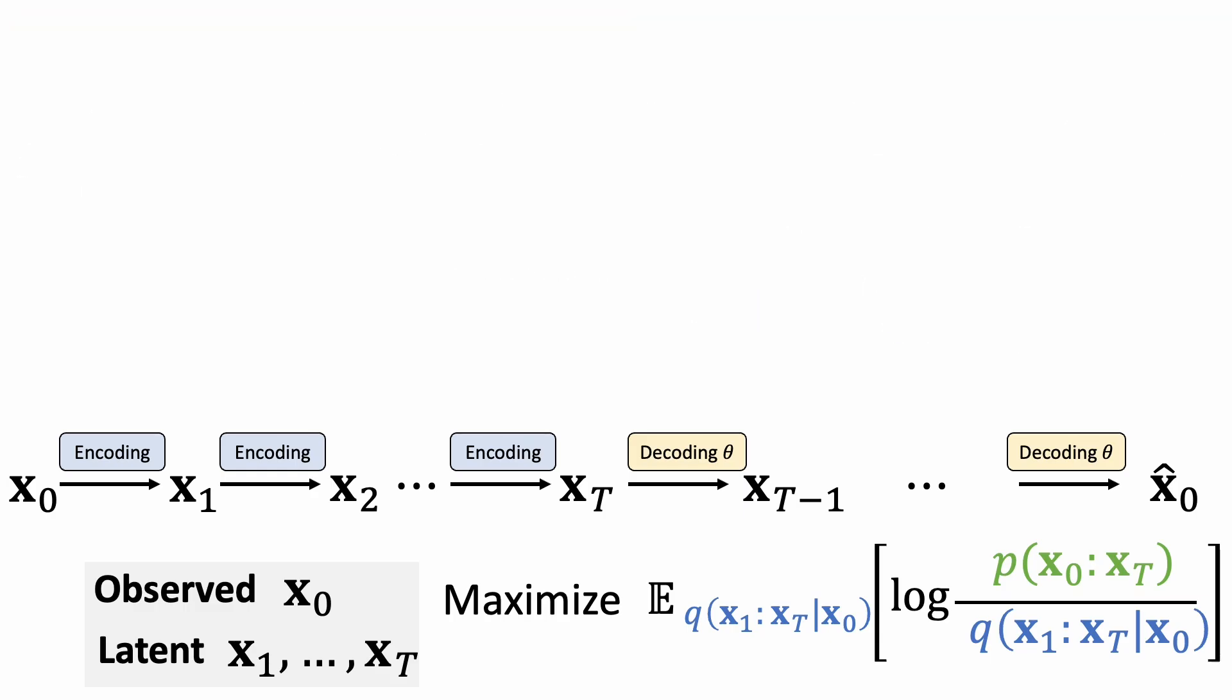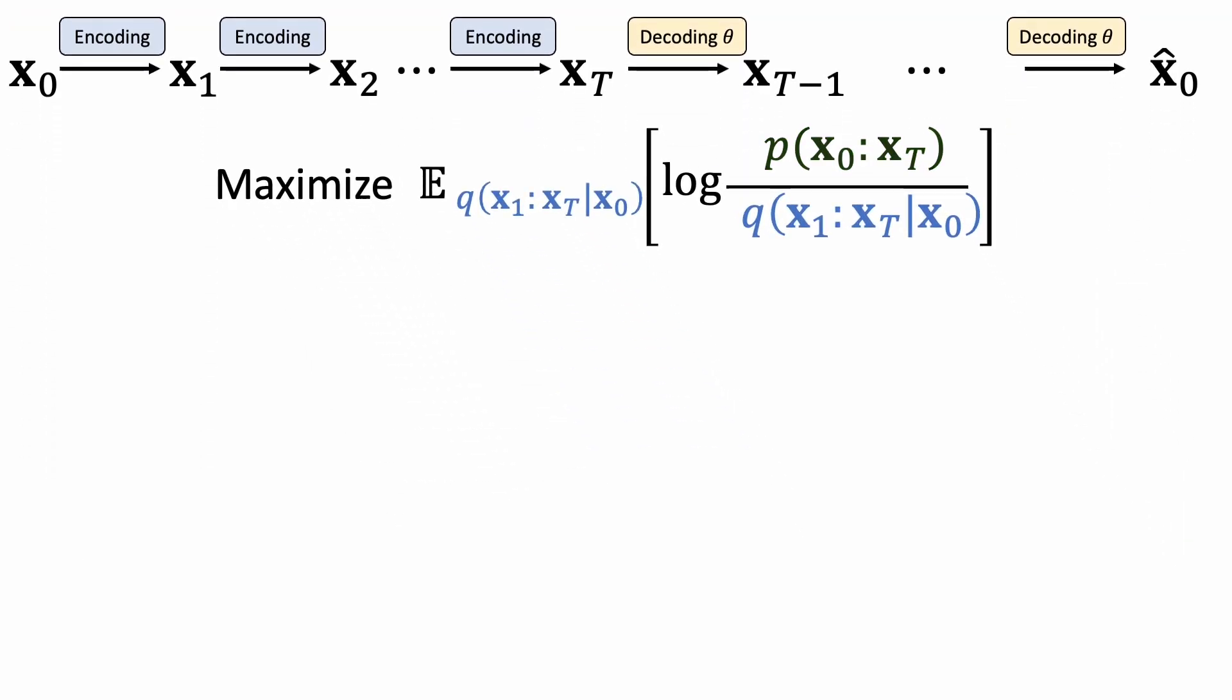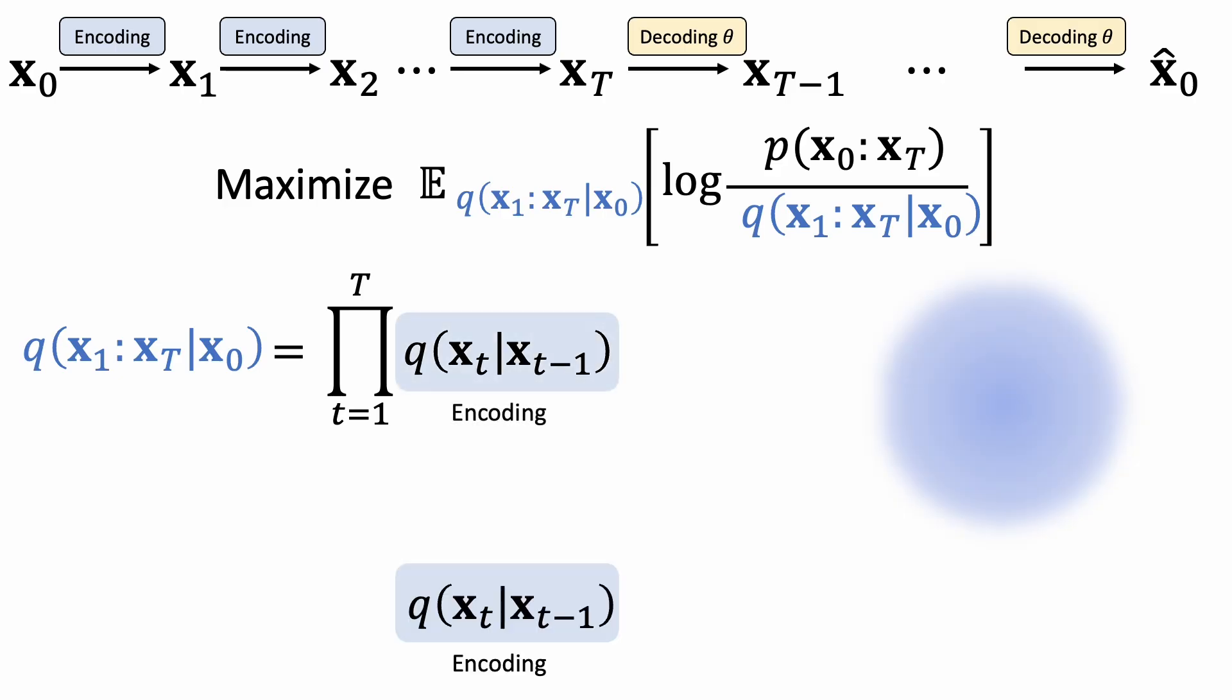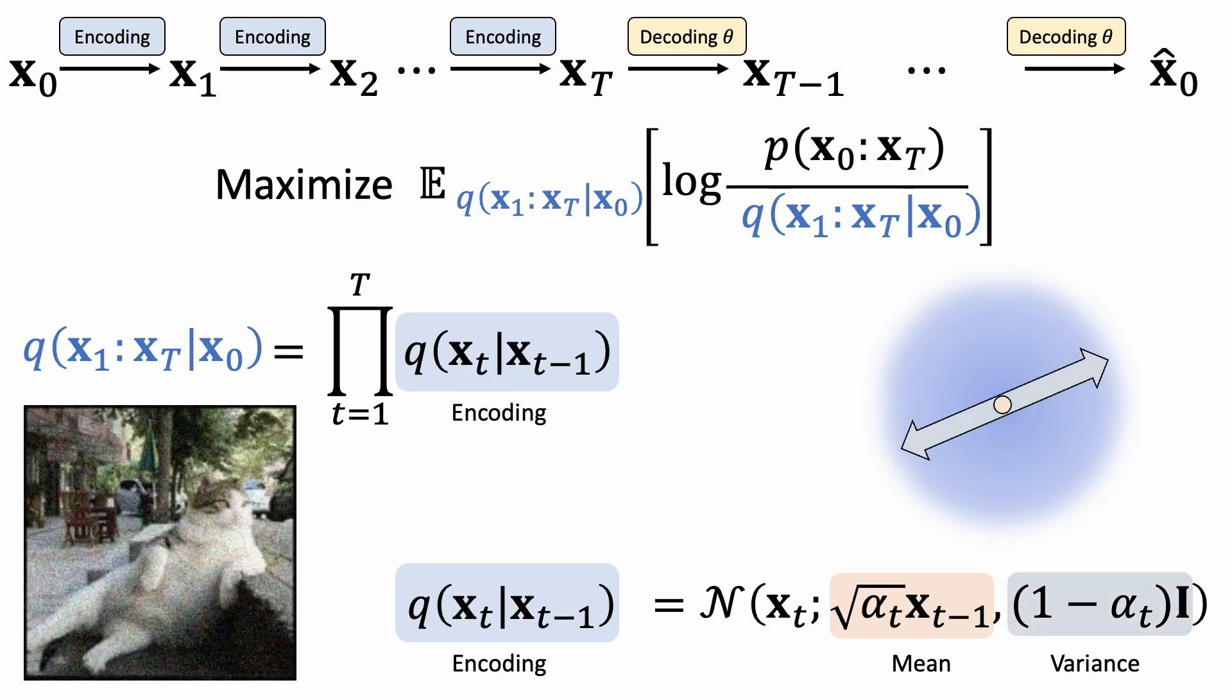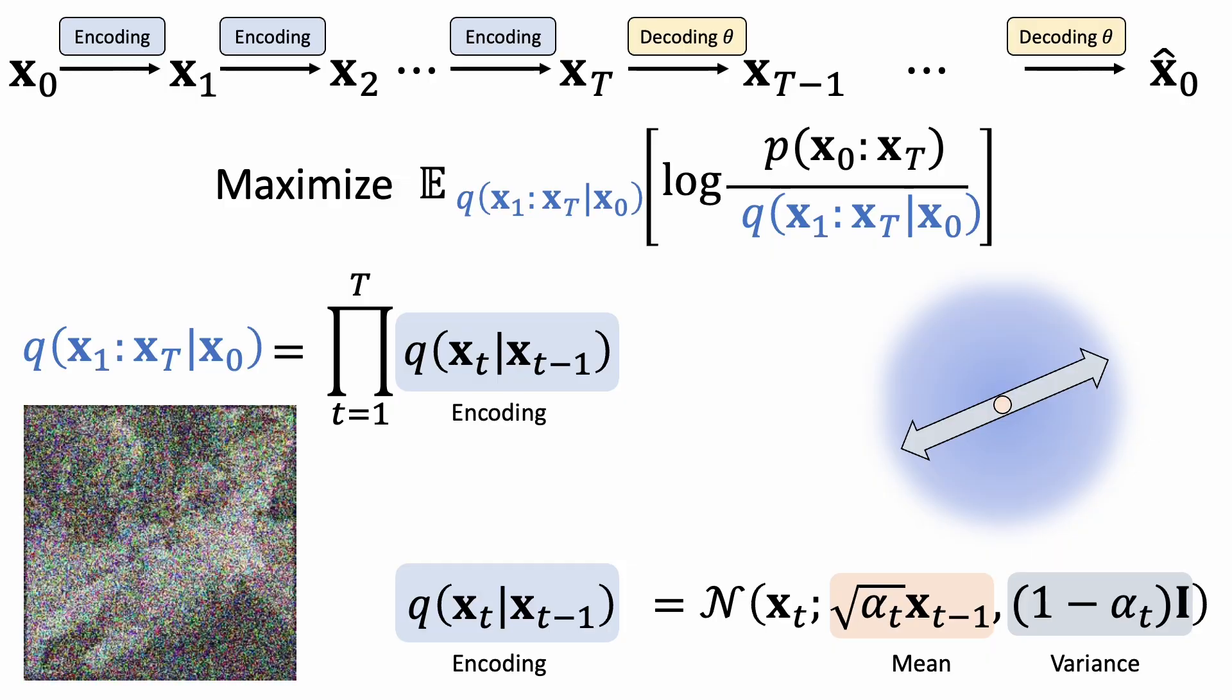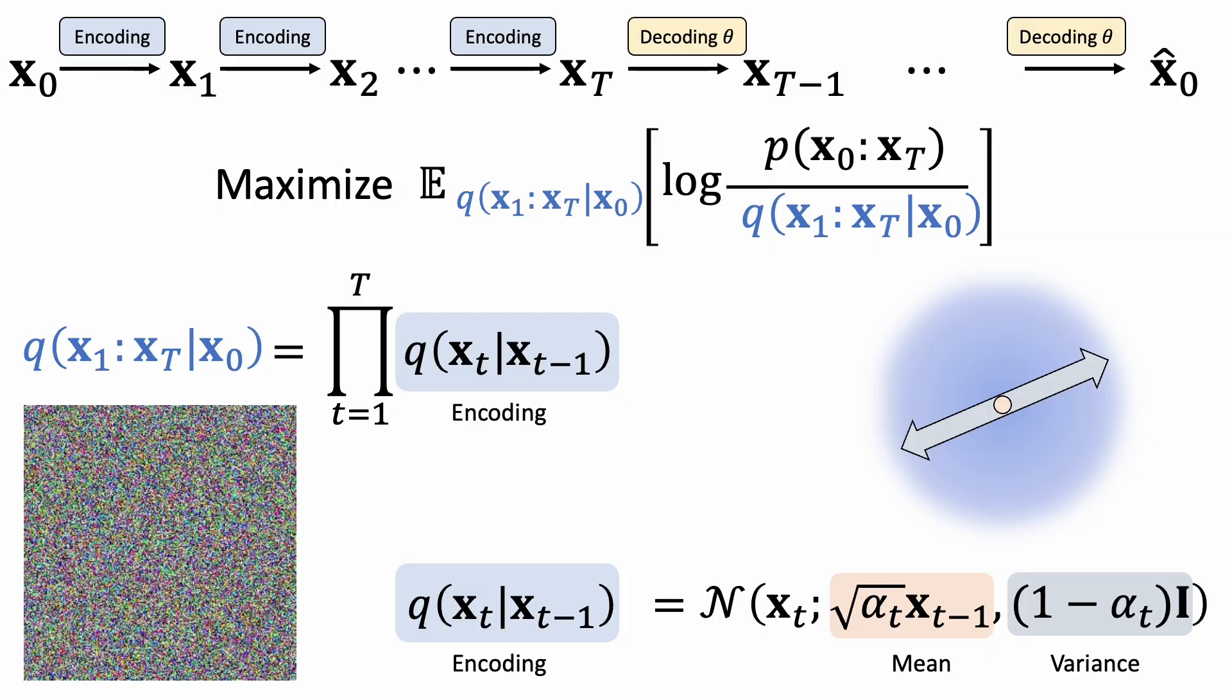Okay, let's first take a look at what the encoding process looks like. We can write the encoding process as a product of transition probabilities. We define the transition probability at each time step as a Gaussian distribution, where the mean is the image from the previous time step x, scaled by a scalar that's less than 1, and some variance. This encoding process ensures that the latent variables become Gaussian noise after many time steps.